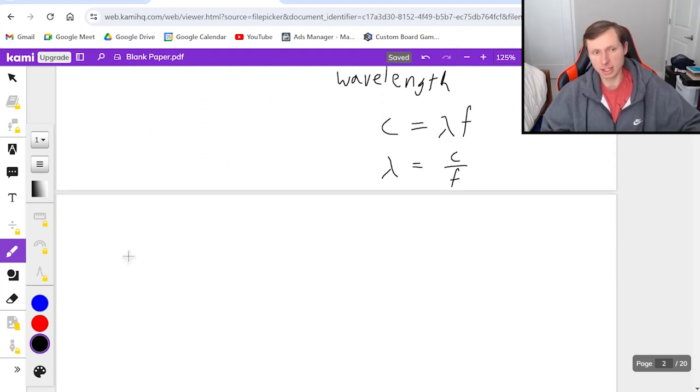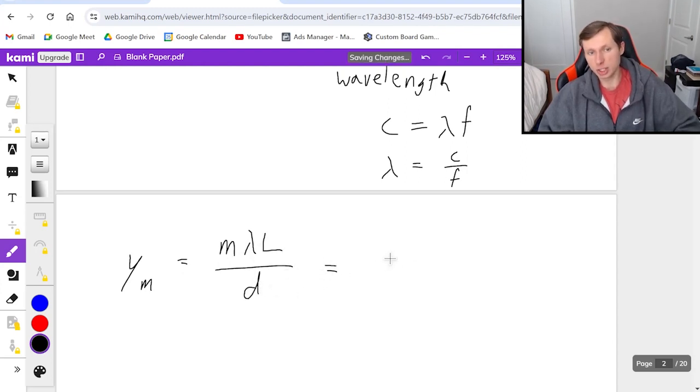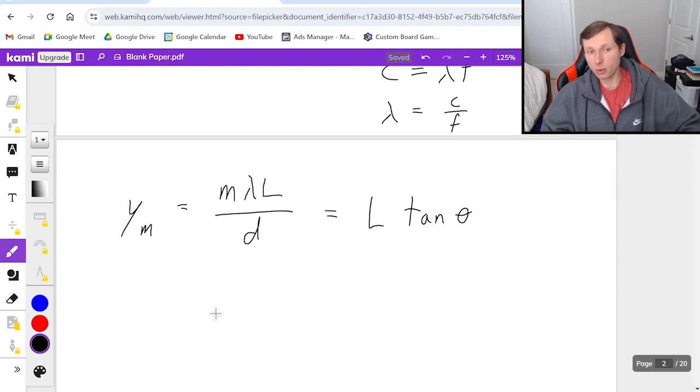The next equation is y_m, the distance from center. That's y_m = mλL/d, or alternatively y_m = L tan θ. Both work depending on what variables you're given.